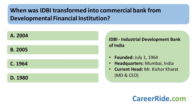When was the IDBI transformed into a commercial bank from a Development Finance Institution? The answer is 2004. The IDBI Bank was constituted under the IDBI Bank Act of 1964 as a Developmental Finance Institution, and it came into being on July 1, 1964. From 1964, it continued to serve as a Developmental Finance Institution for 40 years until 2004, when it was transformed into a commercial bank.